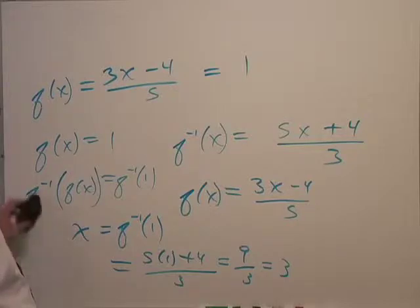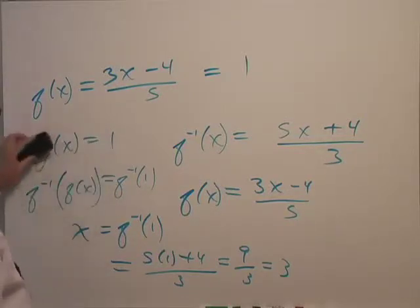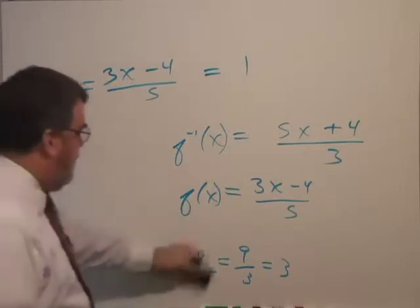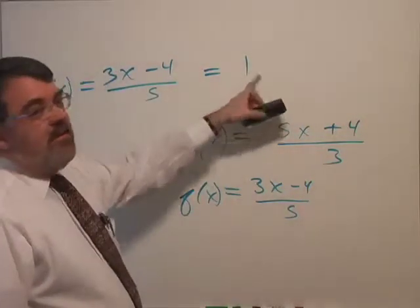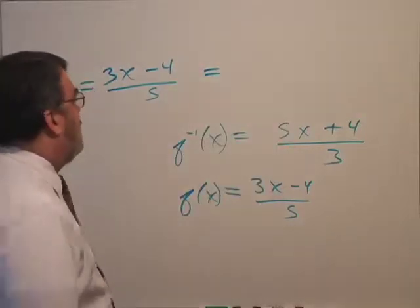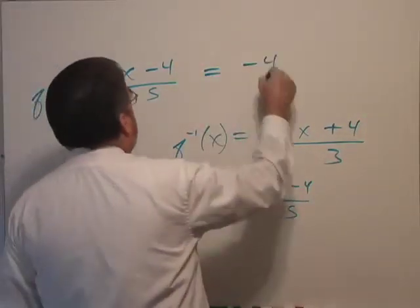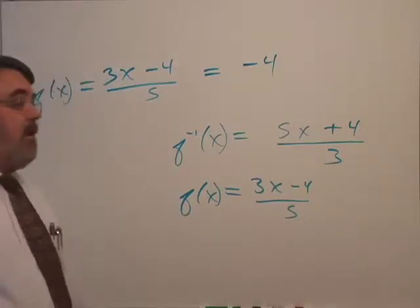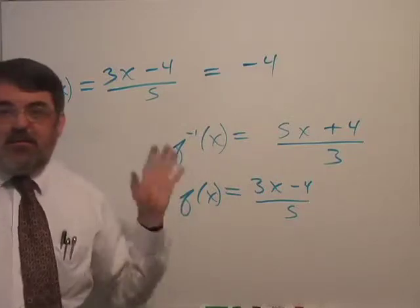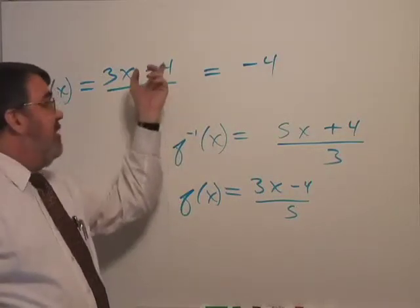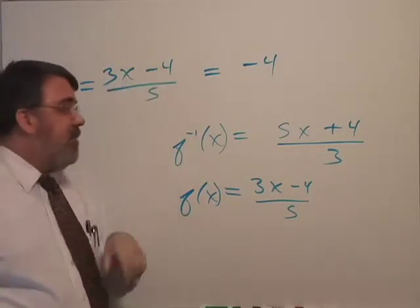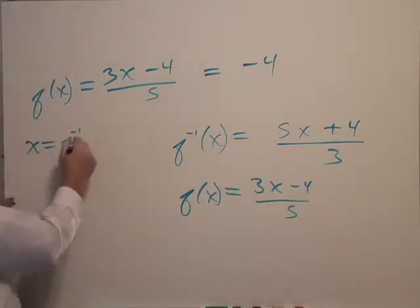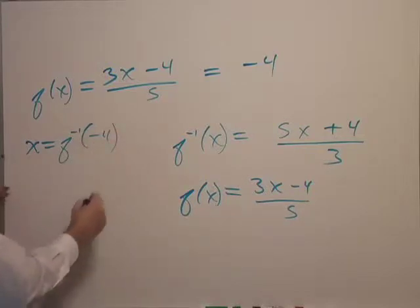Now suppose that we changed our output to this function. Let me erase all this stuff here. Suppose I change this to how about negative 4? Just make up a number. So now I could repeat the whole solution process again. I could multiply by 5, add 4, divide by 3. Or I could say, well look, x is equal to f inverse of my output, negative 4.